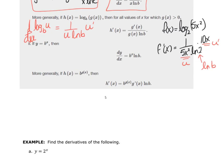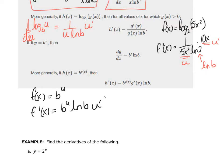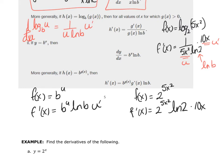Going back to B raised to the X: if F of X equals B to the U, where U is a function, then F prime equals B to the U times the natural log of B, multiplied by U prime. So if F of X equals 2 raised to the 5X squared, then F prime of X is 2 raised to 5X squared times the natural log of 2, multiplied by the derivative of 5X squared, which is 10X.